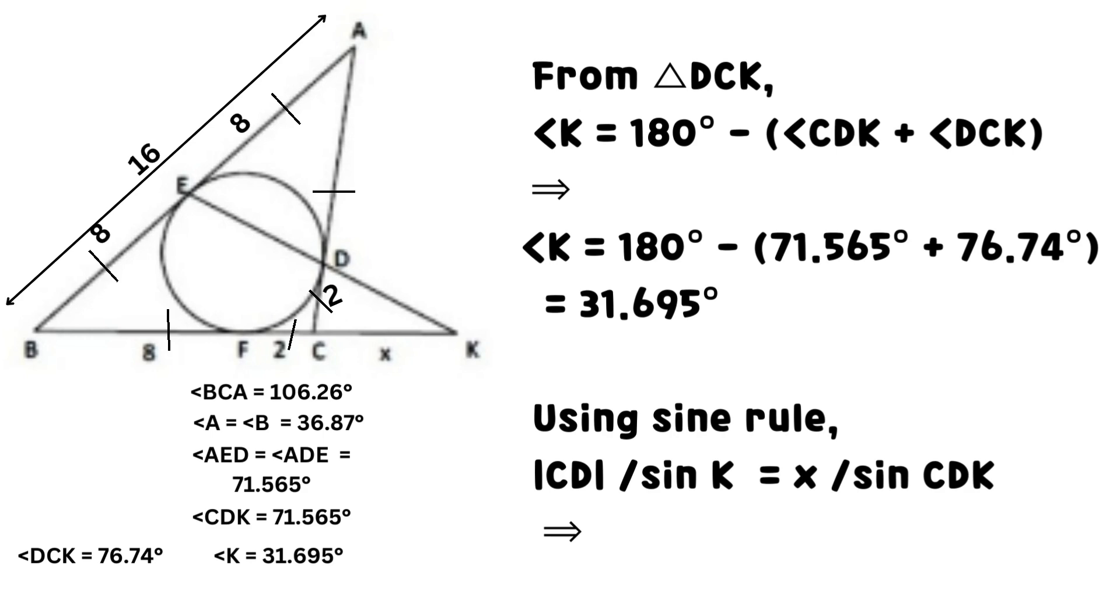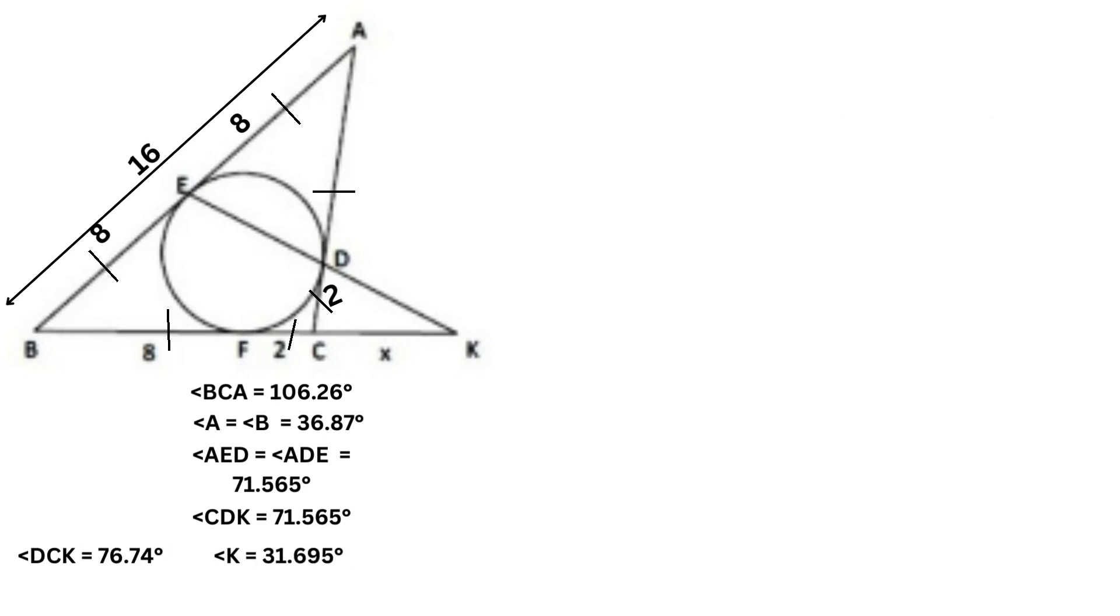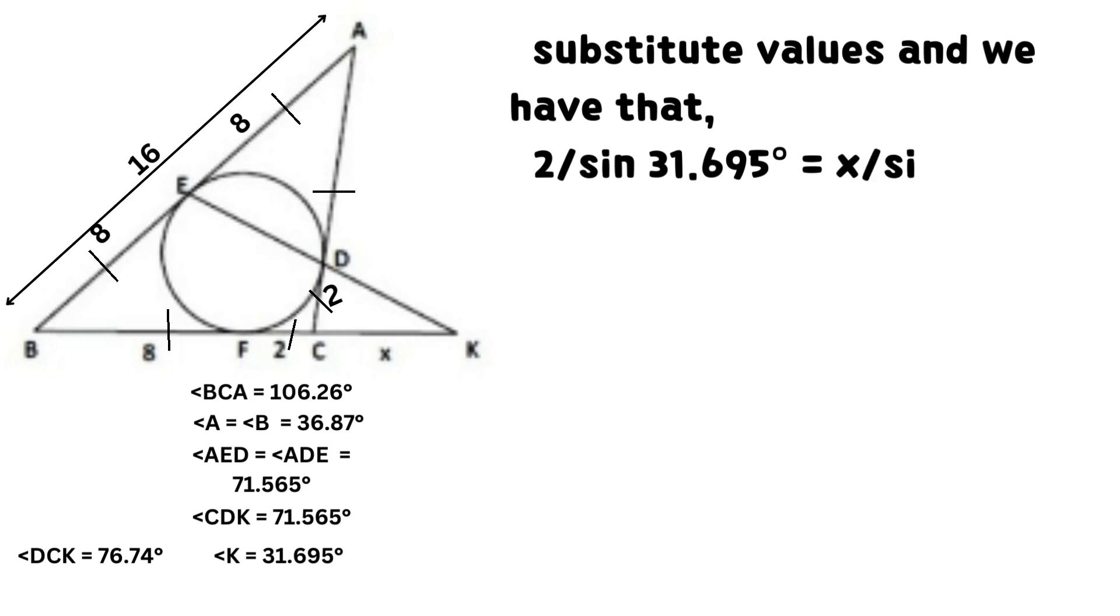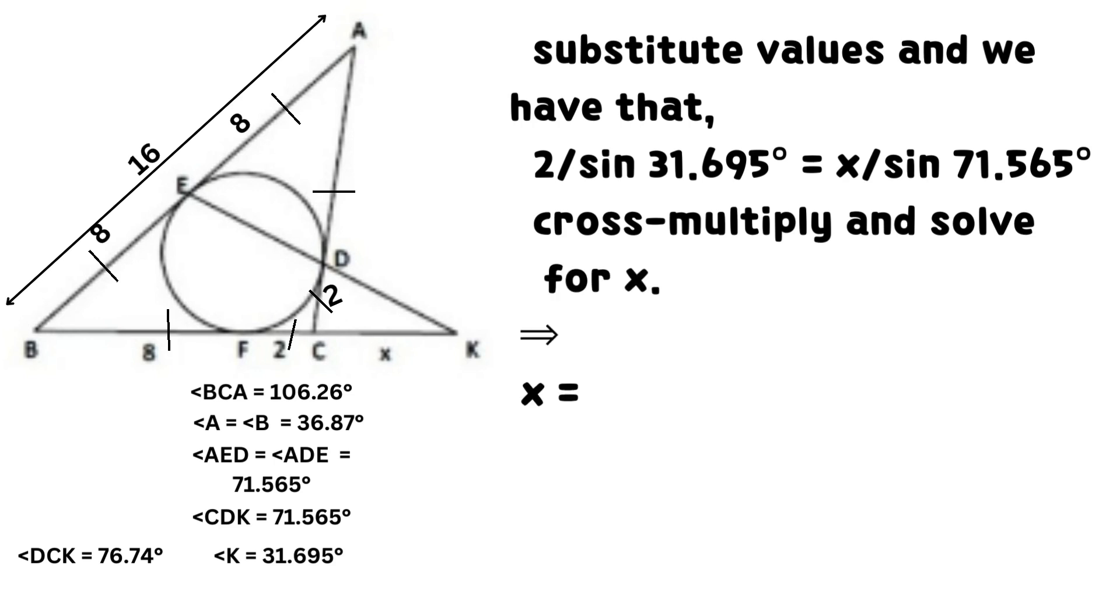Using sine rule, CD divided by sine K equals x divided by sine CDK. Substitute values and we have that 2 divided by sine 31.695 degrees equals x divided by sine 71.565 degrees.